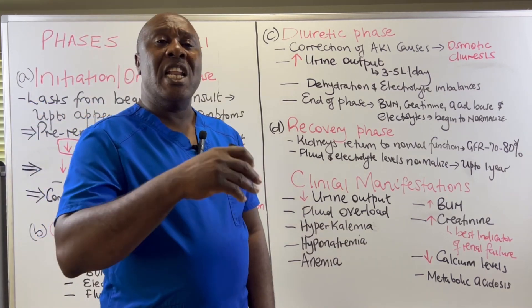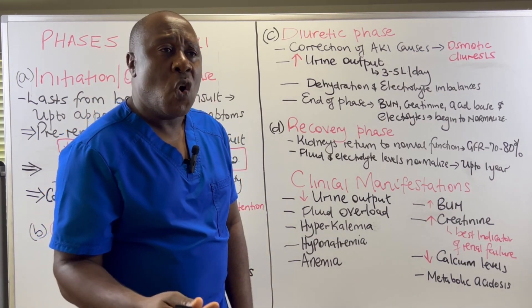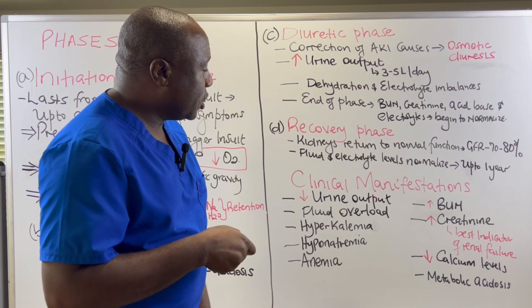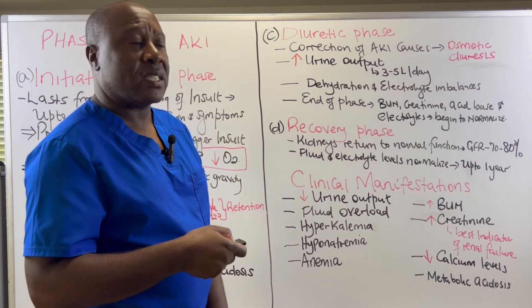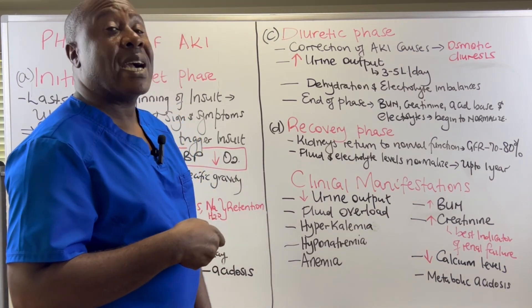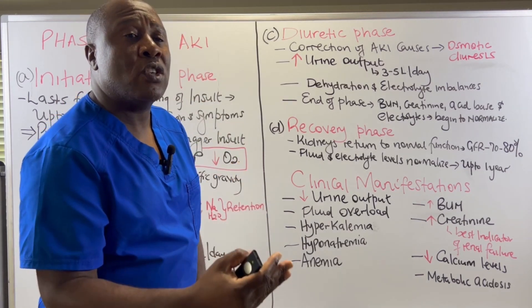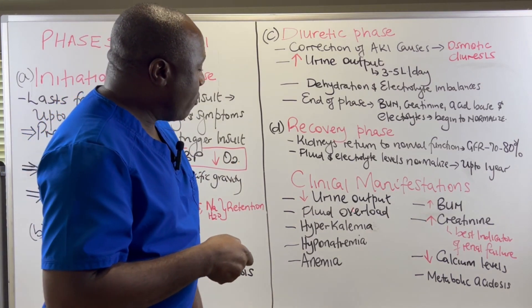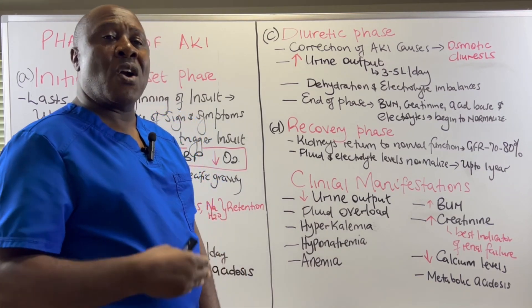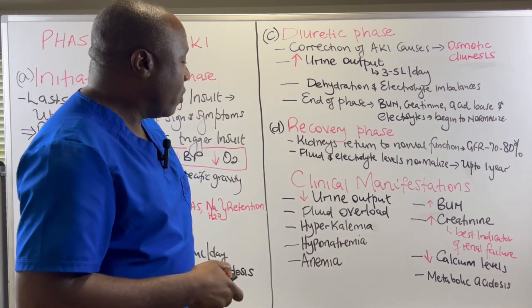Now, what are the clinical manifestations of acute kidney injury? First, decreased urine output — remember the oliguric phase gives us less than 400 ml of urine per day, so decreased urine output is a key clinical manifestation. The kidneys are not performing as they should. Then we have volume overload or fluid overload — people begin to swell in their legs, ankles, and faces because the kidneys are not clearing fluid from the body.